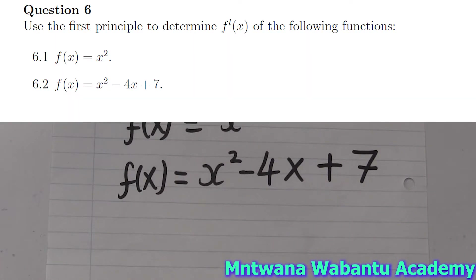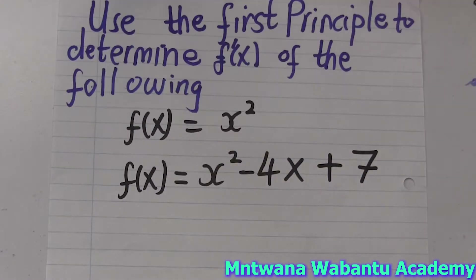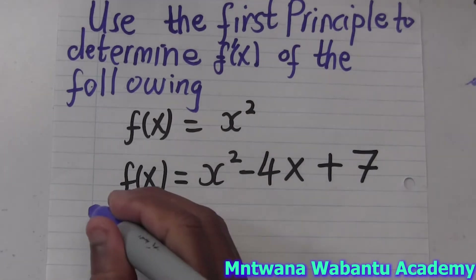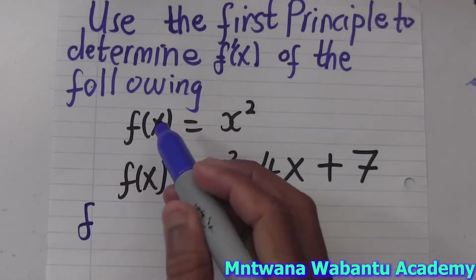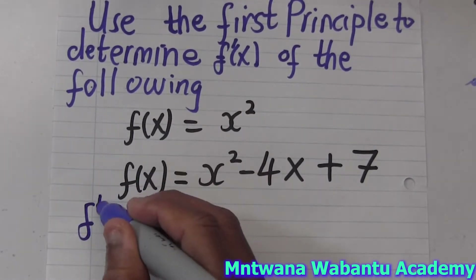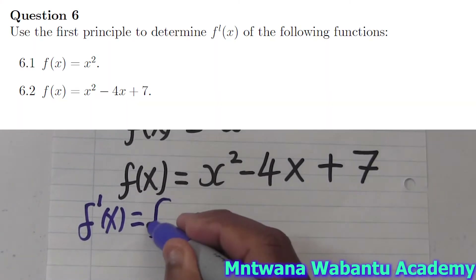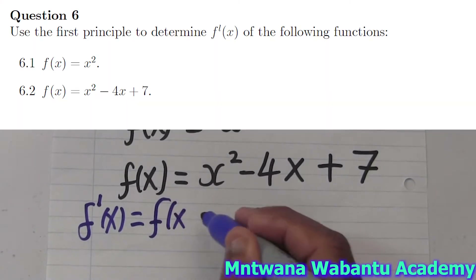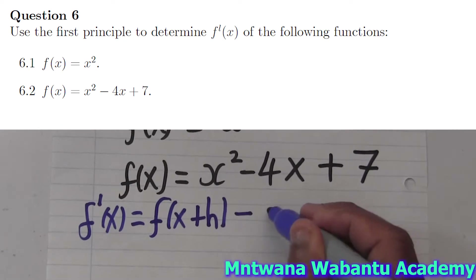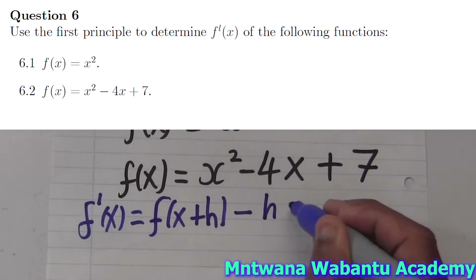Let's use the first principle to determine the derivative. 'f prime' means derivative. So let me start with the first principle. First and foremost, we need to know the formula of the first principle, which says if the function is f, we must say g of f(x) equals f — this is a formula you need to memorize.